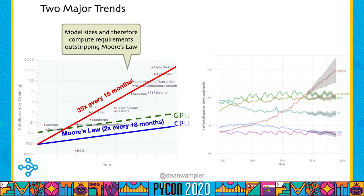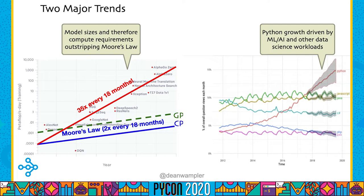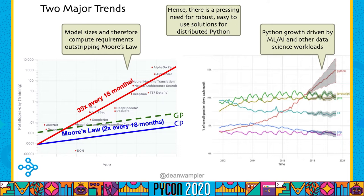At the same time, Python is continuing to grow strongly as a language, driven in large degree by interest in ML, AI, and other data science workloads. Together, these two trends are creating a pressing need to make it easy to distribute Python applications over a cluster to meet demands for scalability, while also being accessible and easy to use by Python developers.